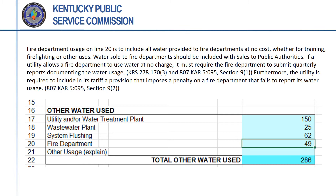Any water provided to fire departments at no charge, whether for training, firefighting, or other purposes, is to be recorded on line 20. If a fire department was billed for water, such as water supply to a fire station, that is to be included with sales to public authorities in the previous section. Any utility that allows a fire department to use water at no cost must require the fire department to submit quarterly reports documenting its water usage. This is a legal requirement under Kentucky statutes and PSC regulations. Utilities are also required by PSC regulations to include in their tariff a provision that imposes a penalty on fire departments that fail to provide the quarterly reports.